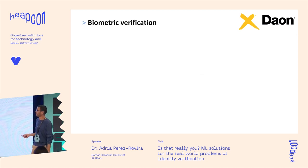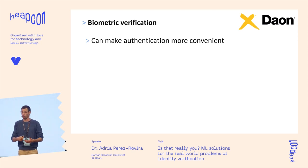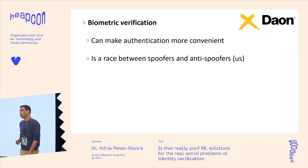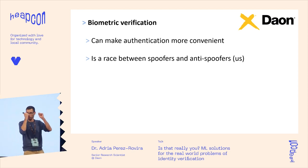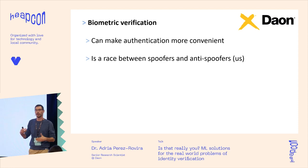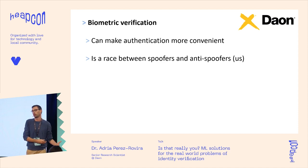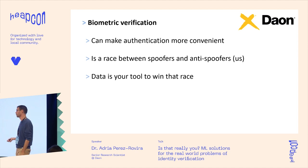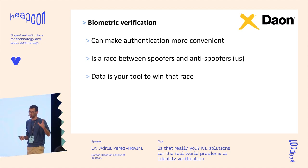In summary: biometric verification can make authentication more convenient, and most of you already use some form of it — fingerprints, face unlock on mobile. However, this is a constant race between spoofers and anti-spoofers. You need to think like a spoofer in order to create the datasets your models need to learn to prevent attacks. The way to win this race is data — data, data, data.